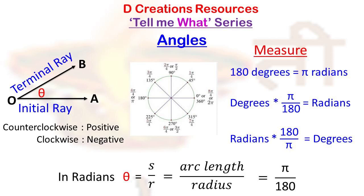On the other hand, if the initial ray is rotated clockwise in order to coincide with the terminal ray, then we say that this angle is negative. The common end point at which the two rays meet is called the vertex.